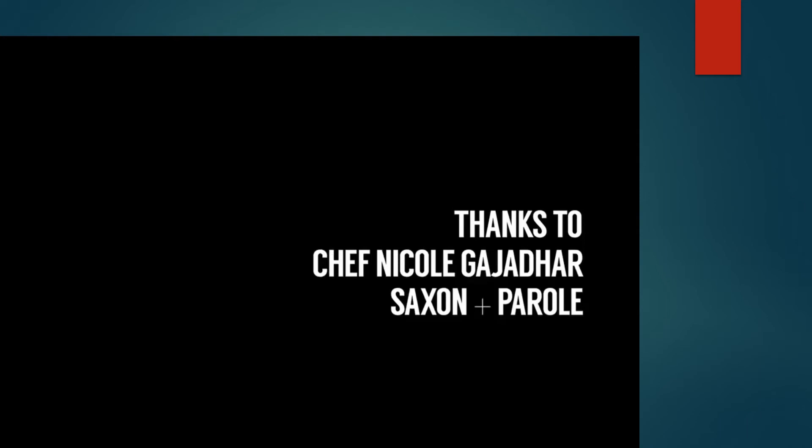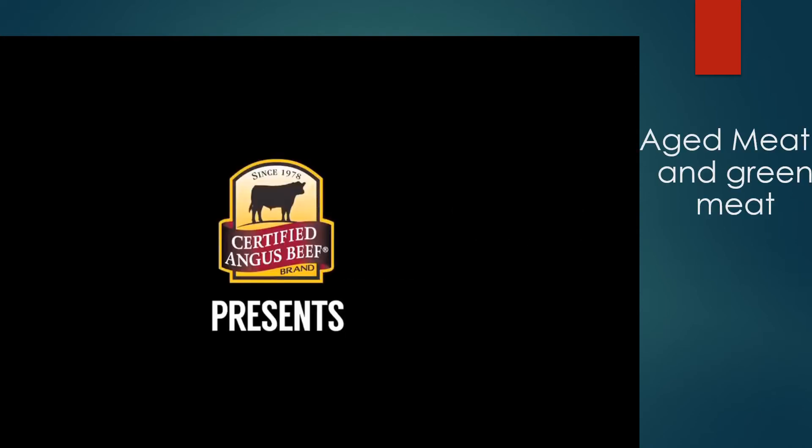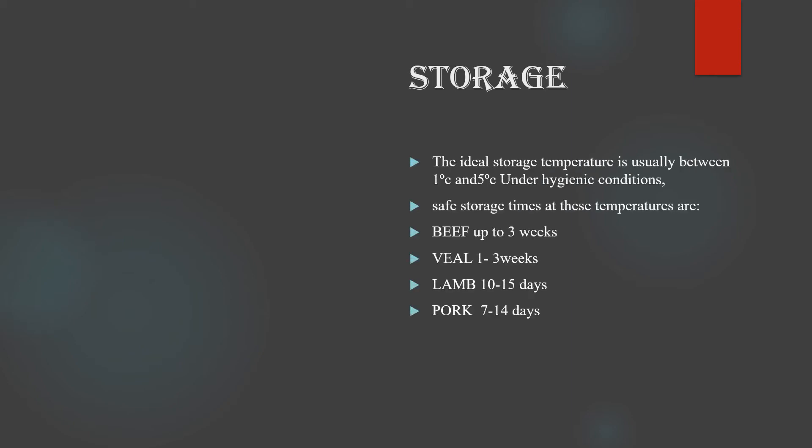This video tells you exactly the process of dry aging and why it is important. Now we move on to storage. When storing fresh meat and whole-chain products, all types of meat should be unwrapped and hung so that air can circulate around them. They should be stored at 1 to 3 degrees Celsius in a refrigerator.